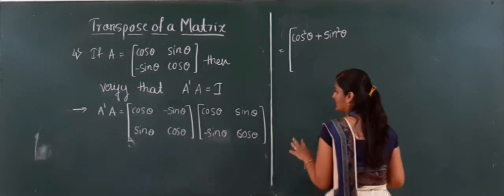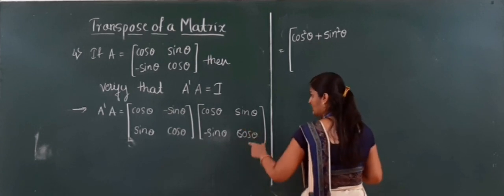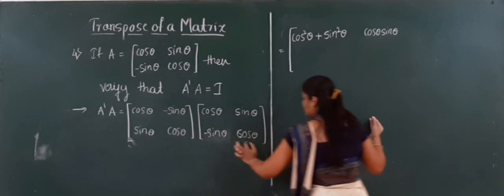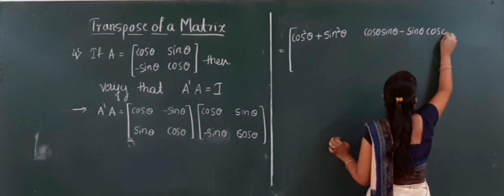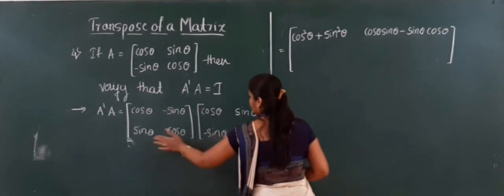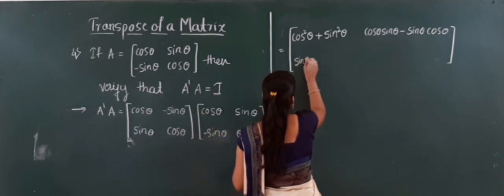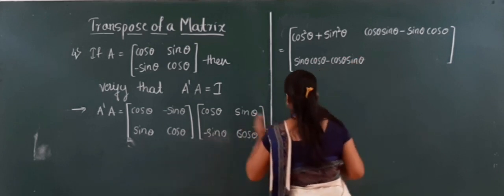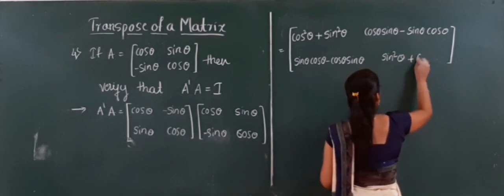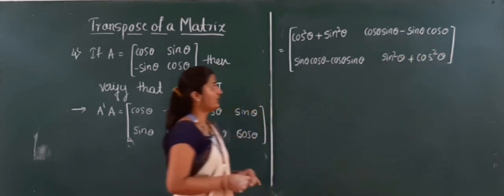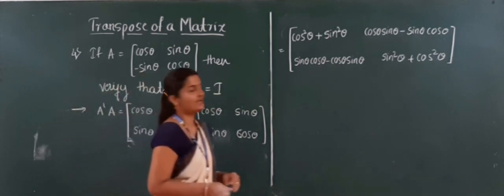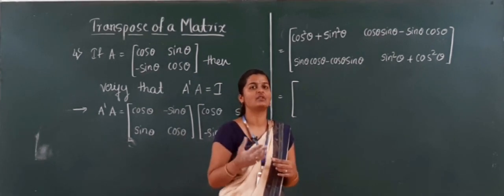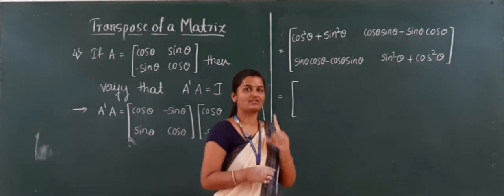Continuing the multiplication: first row, second column gives cos theta into sine theta minus sine theta into cos theta. Second row, first column gives sine theta into cos theta minus cos theta into sine theta. Second row, second column gives sine squared theta plus cos squared theta.